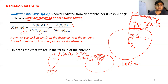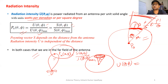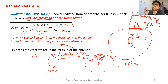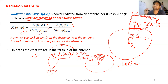Whatever we discuss about radiation intensity, directivity, gain, or radiation pattern, we always talk about the far field region, because in the far field region the radiation pattern is uniform.